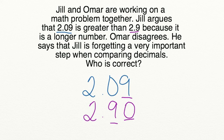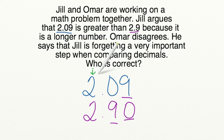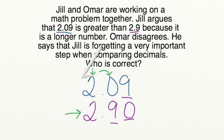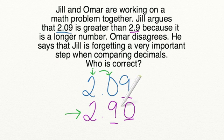Now we can go ahead and compare the numbers. We're going to start in the furthest place value to the left — that's the ones place. Since there is a two in the ones place of both numbers, we need to move to our next place value over. Since nine is greater than zero, our number in purple is the larger number. Two and nine tenths is greater than two and nine hundredths. Even though two and nine hundredths looks like a longer number, since we have a nine in the tenths place, two and nine tenths is the greater number. That means that Omar is correct.